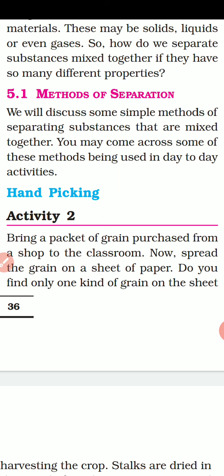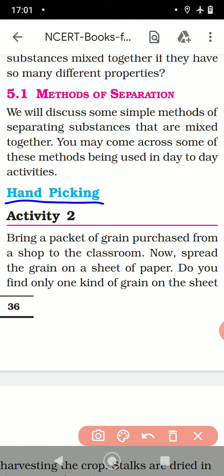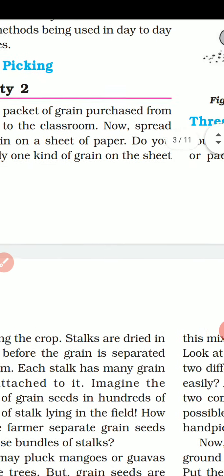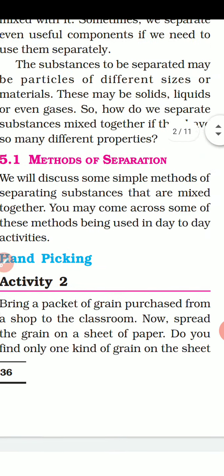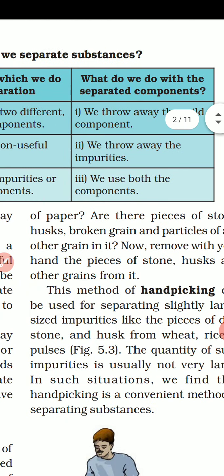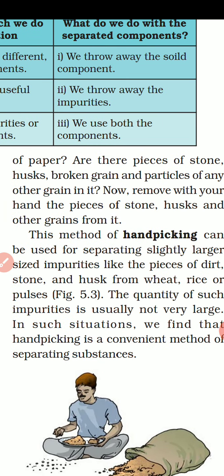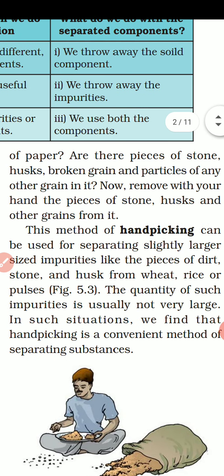Let's start with hand picking — this is the easiest and first separation method. You have to perform activity number two: hand picking. You are picking the non-useful or useful substances by hand. Bring a packet of grain from the shop to the classroom, spread the grain on a sheet of paper. Do you find only one kind of grain, or do you find unwanted substances — pieces of stones, broken grains, or particles of any other grain?